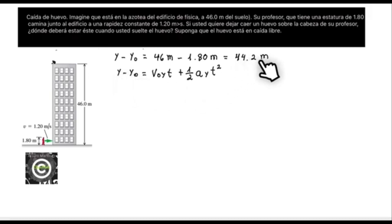The initial speed, which is zero, the time is the unknown, plus one half times the acceleration, which would be the gravity in y times t squared. So we substitute.